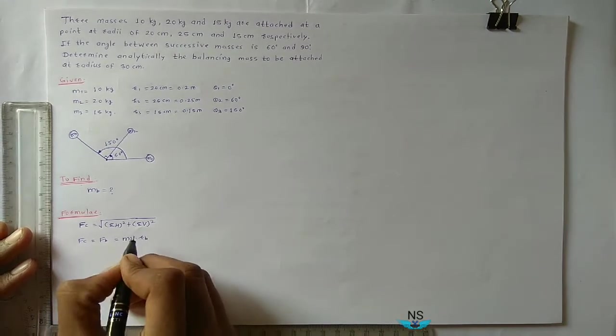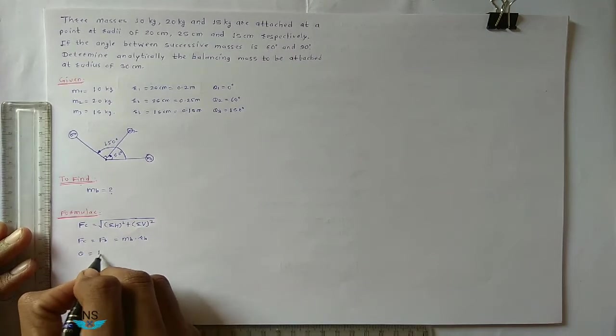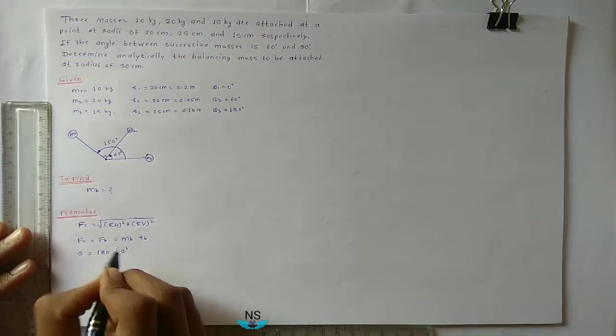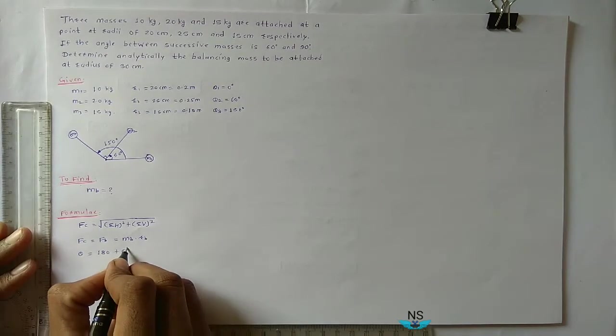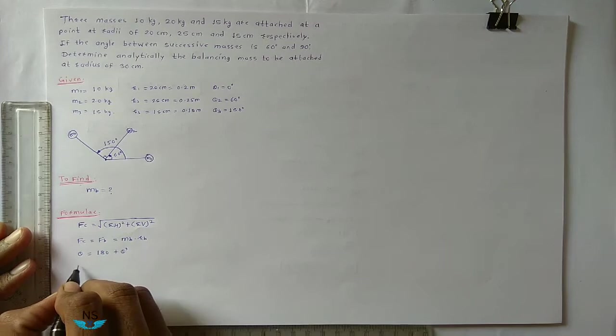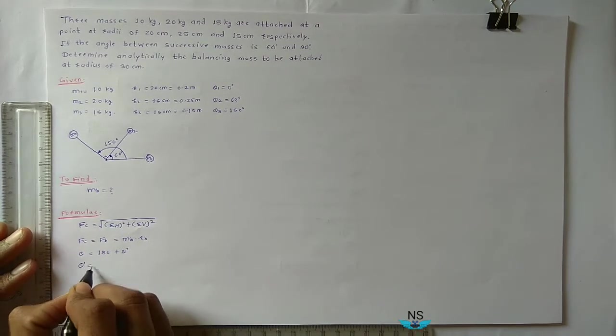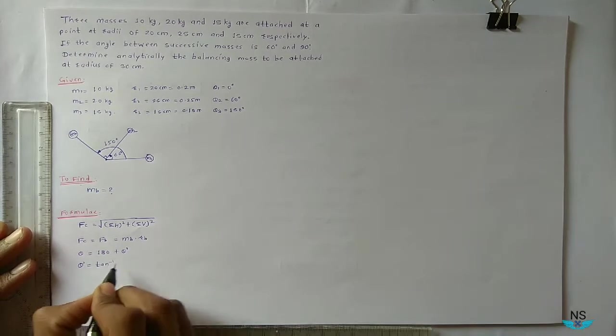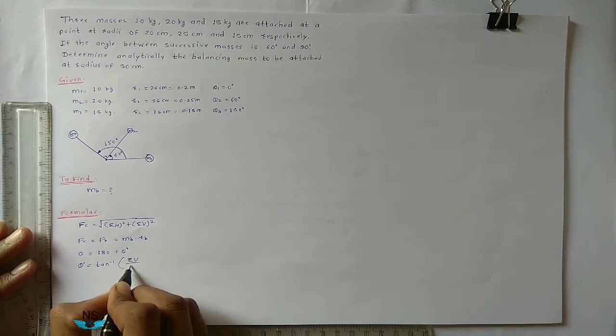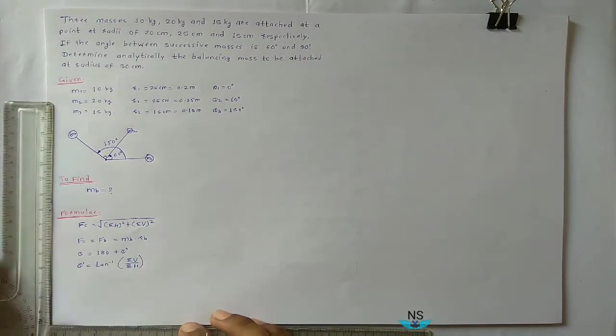From this resultant centrifugal force you find Mb. So Fb is equal to Mb into Rb. Position theta is equal to 180 plus theta dash, where theta dash is the position of resultant force from positive x-axis. Theta dash is equal to tan inverse summation V divided by summation H. These formulas are required.